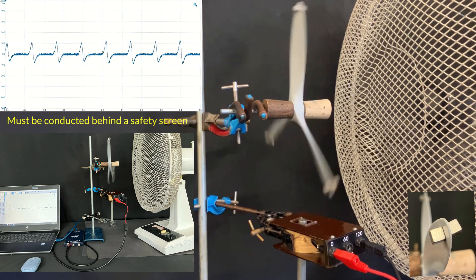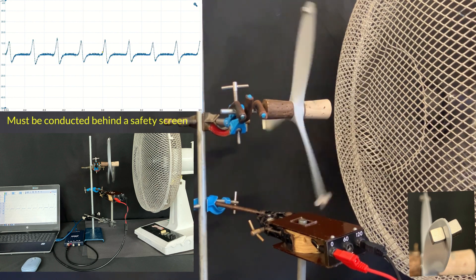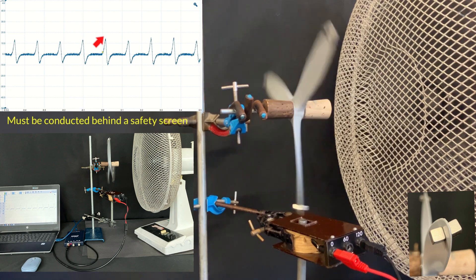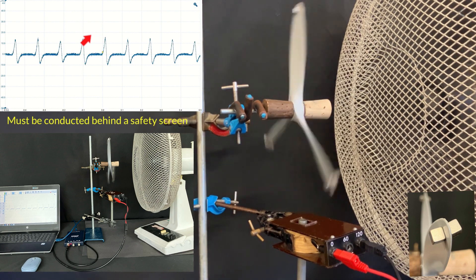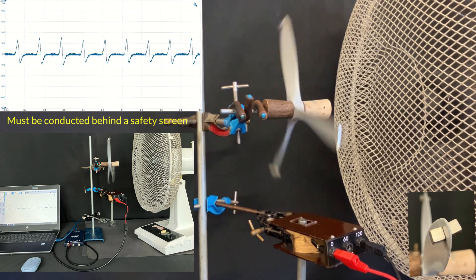As it turns faster, the magnetic field is changing at a higher rate, so we get a larger induced potential difference, and there is less time between each induced potential difference because the magnets arrive more often.